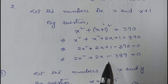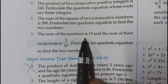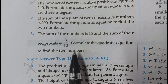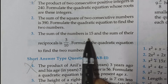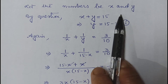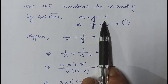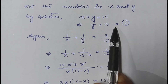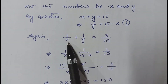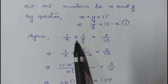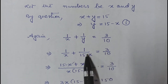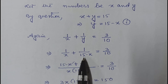Question number 3: the sum of two numbers is 15 and the sum of their reciprocals is 3/10. Formulate the quadratic equation. Let the numbers be x and y. Since their sum is 15, y = 15 - x (equation 1). The sum of reciprocals gives 1/x + 1/y = 3/10. Substituting y: 1/x + 1/(15-x) = 3/10. Taking LCM as x(15-x):